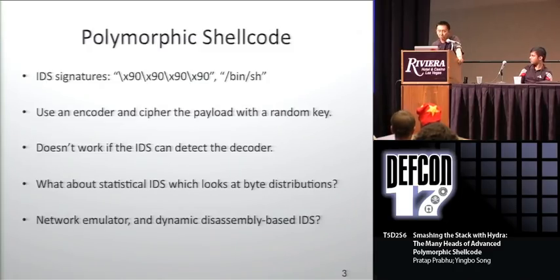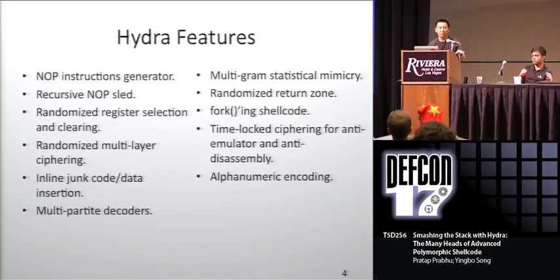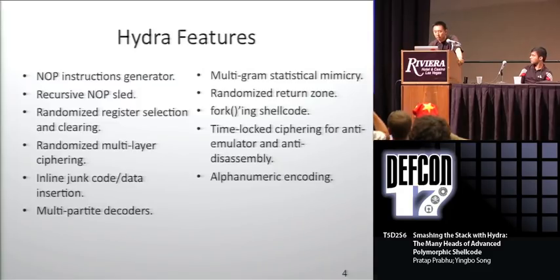Here's a listing of Hydra's features: we have a no-op instruction generator, recursive no-op sleds, everything is randomized including register selection and clearing, randomized multi-layer ciphering. We do junk code and data insertion, multi-partite decoders — we take the decoder, break it up into pieces, and insert it into the payload itself. Multigram statistical mimicry uses machine learning techniques to make your shellcode look like normal traffic. Randomized return zones basically jump into different parts of the no-op sled. Forking shellcode allows the vulnerable process to continue executing. We also do something called timelock ciphering for anti-emulator and anti-disassembly techniques. Shellcode can also be pushed down to printable characters range.